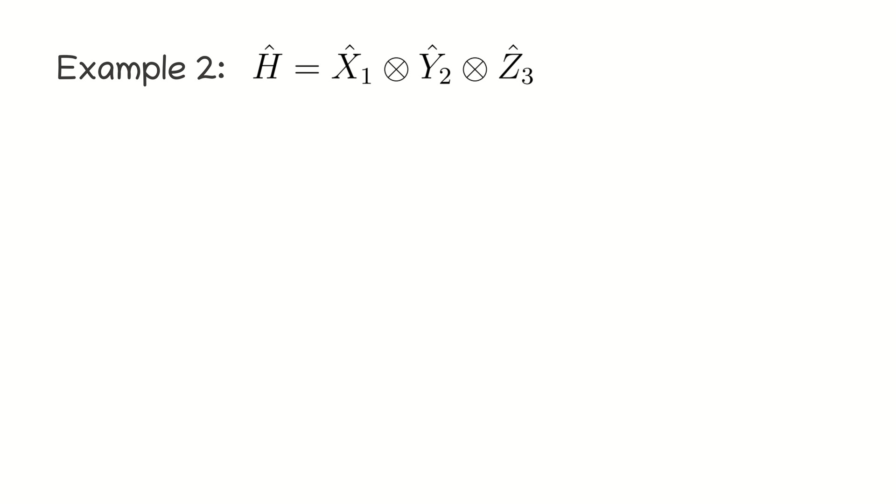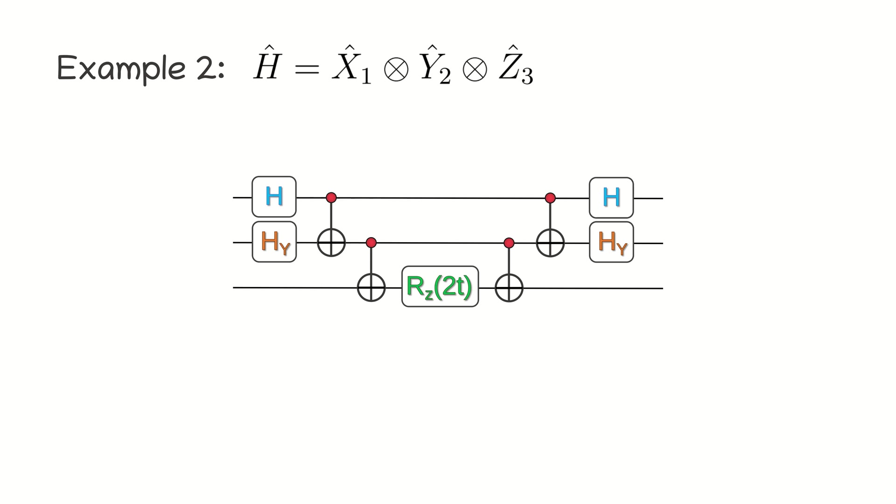Another example. Hamiltonian consists of three Pauli operators, X, Y and Z. In this case, we should add the transformation to the first and the second qubits in the quantum circuit for Rzz operator.